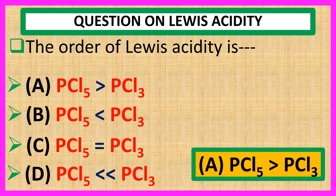Answer is A: PCl₅ greater than PCl₃. Now see the explanation. In both the cases, the central element phosphorus has potential d-orbitals which can expand its octet. Here the relative electronegativity of phosphorus will decide which one will be the better Lewis acid than the other.